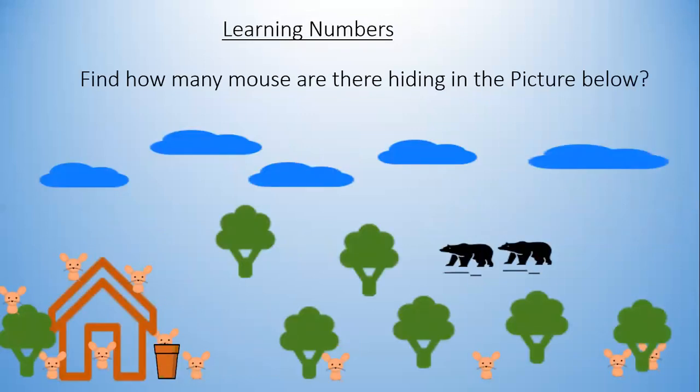Find how many mice are hiding in the picture below. I can see one above the tree, two above the roof, one in front of the door, one near the house, one near the tree, one behind the pot, one near the tree, and four near the trees. So let's count them. 1, 2, 3, 4, 5, 6, 7, 8, 9, 10, 11. I think there are 11 mice.